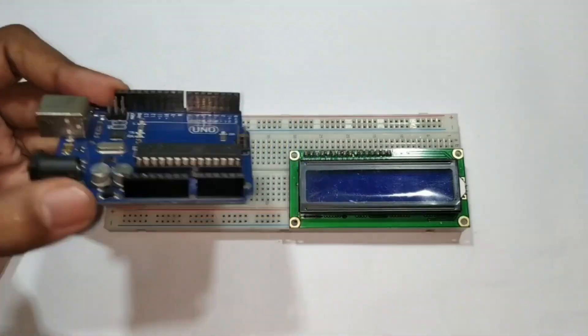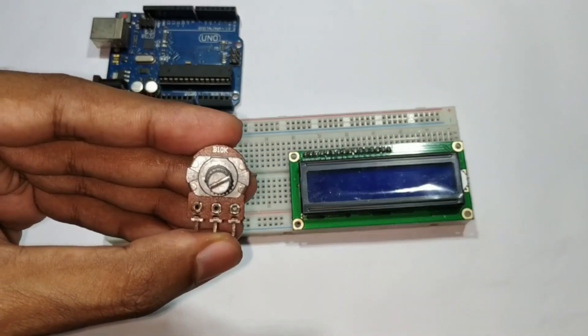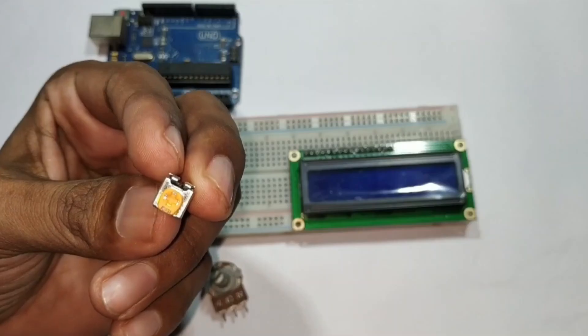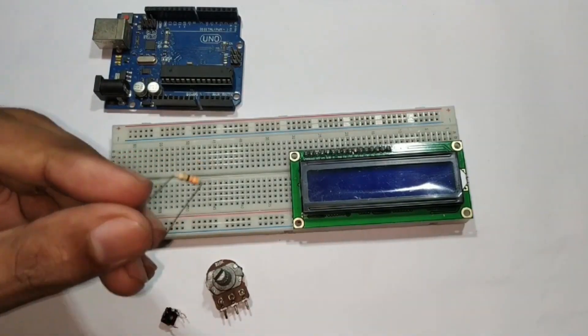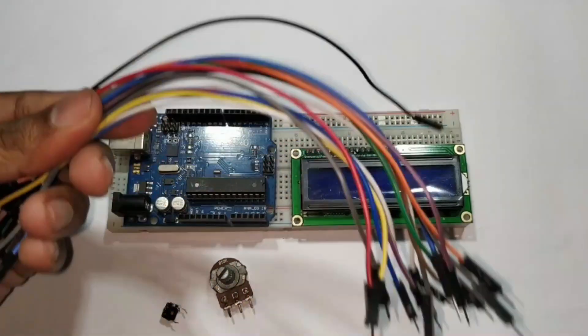we need an Arduino UNO board, 10k ohm variable resistor. I have two different kinds of variable resistor and you can use any of them, 330 ohm resistor and some jumper cables for circuit connection.